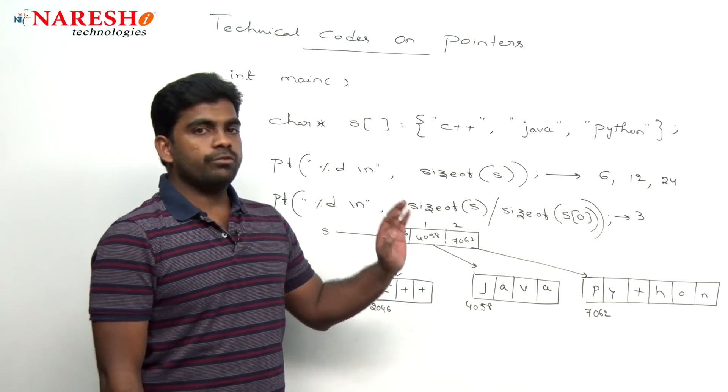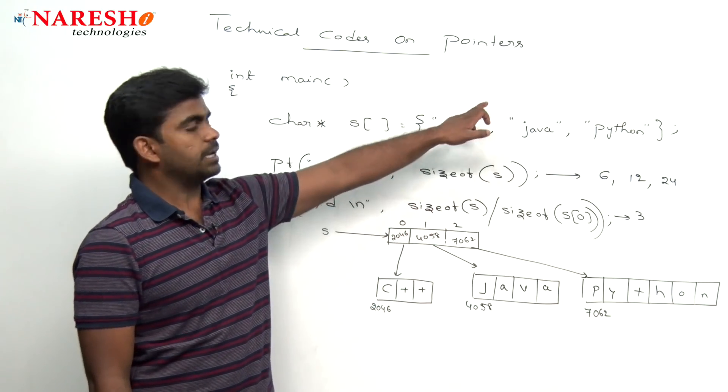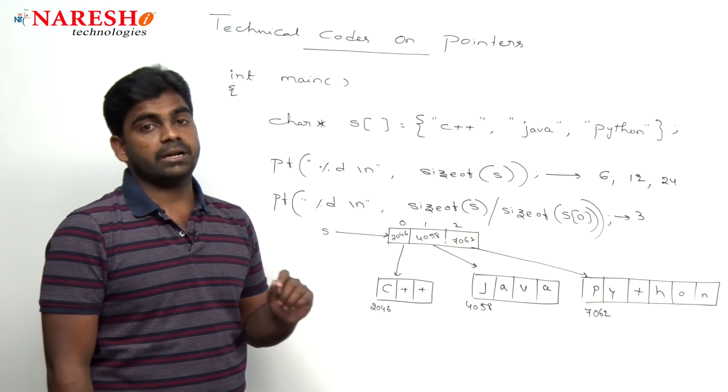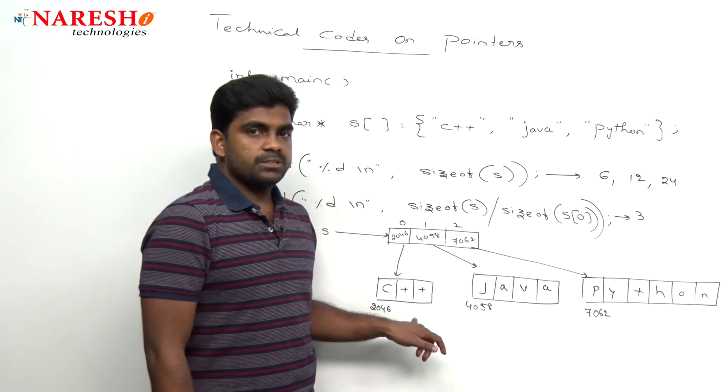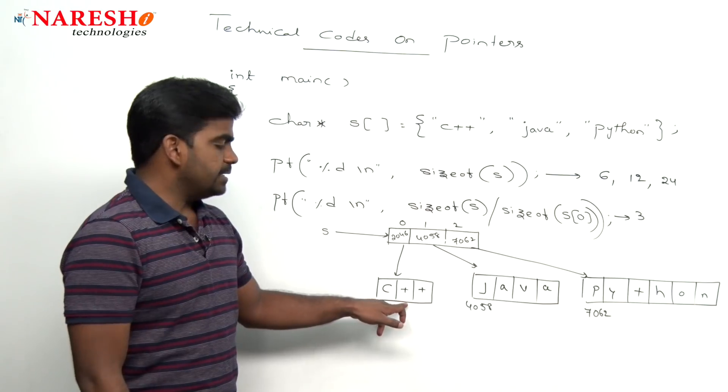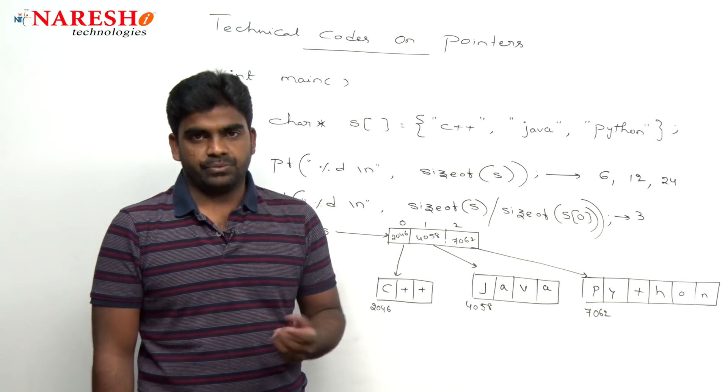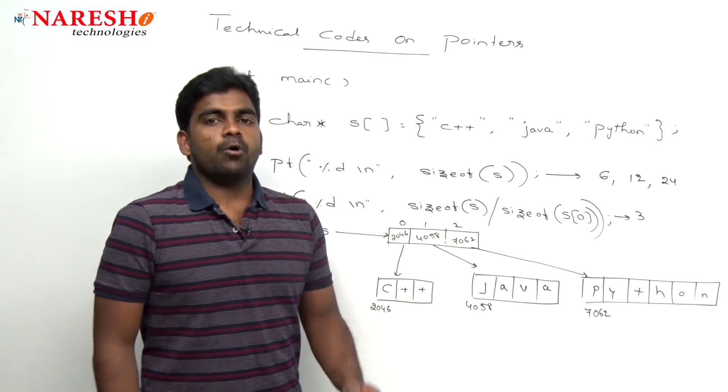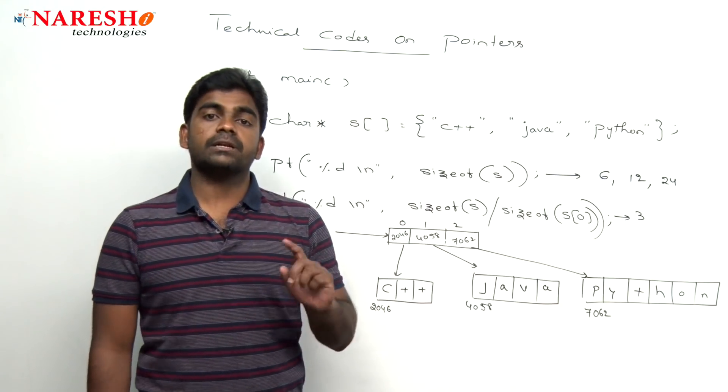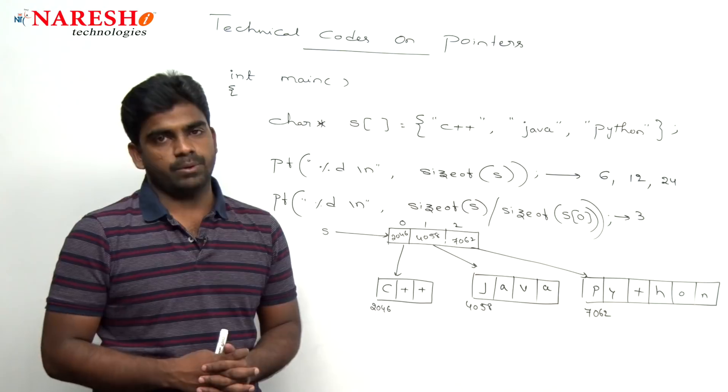So this is how to find out the size of array which holds a collection of strings and what is the size of each string. But remember, string size means what? The length will not give. Here every string is representing with the help of a pointer, that is what character pointer. So pointer size only it will give. If you want to find that length means string length function we need to use, string length function, remember that.